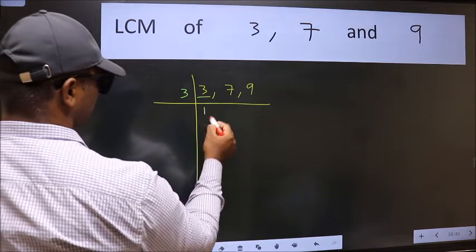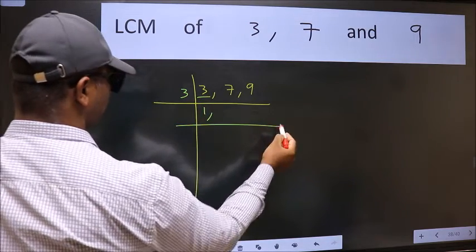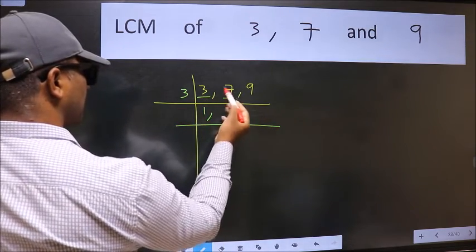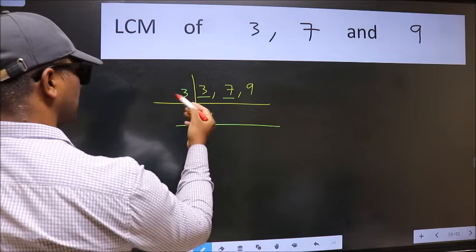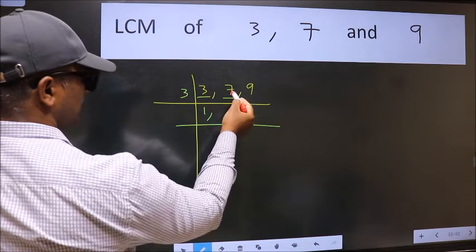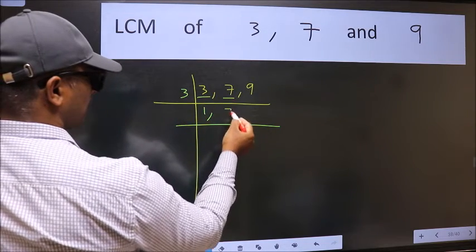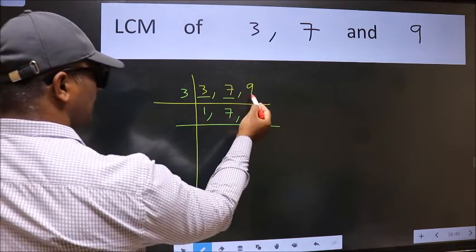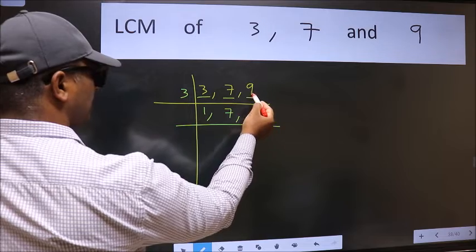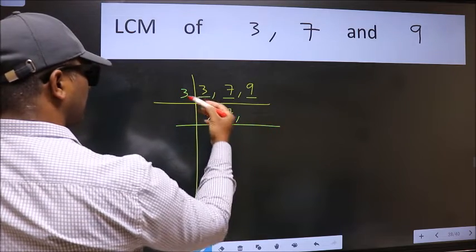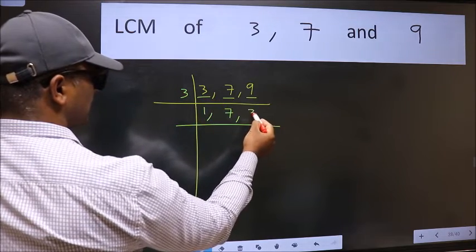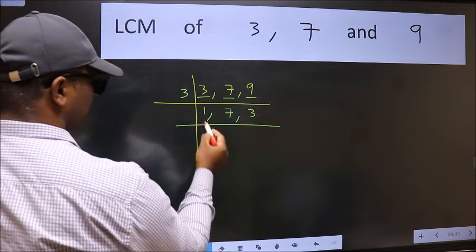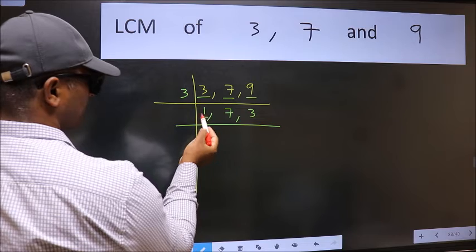So 3 wants 3. The other number 7 is not divisible by 3, so we write it down as it is. The other number 9 — when do we get 9 in the 3 table? 3 times 3 is 9. Now we got 1 here.